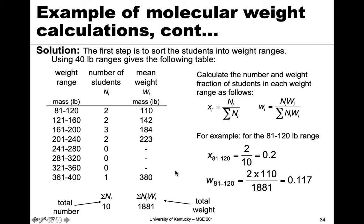To calculate x_i, the number fraction, we take the number of students in a given range divided by the total of 10. So the first range gives 2/10, the next 3/10, 2/10, 0/10, and 1/10. For the weight fraction w_i, we multiply the number in that range by the mean weight to get the total mass in that range, then divide by the total mass of 1881. All fractions must sum to one.